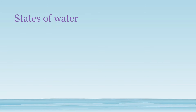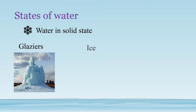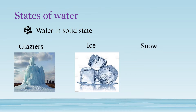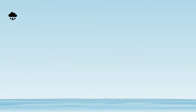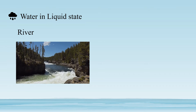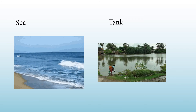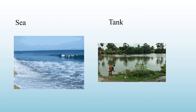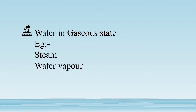Let's identify the states of water further. Water in the solid state: glaciers, ice, and snow are examples. Water in the liquid state: rivers, wells, sea, and tanks are examples. Water in the gaseous state: steam and water vapor are examples.